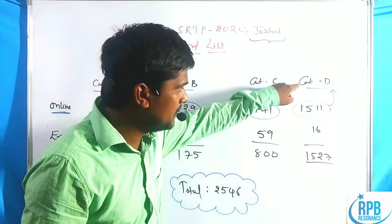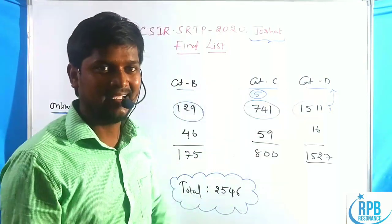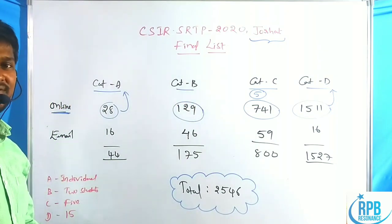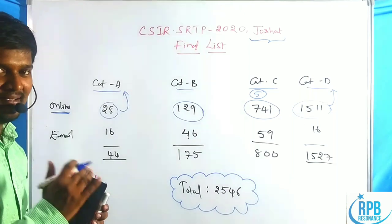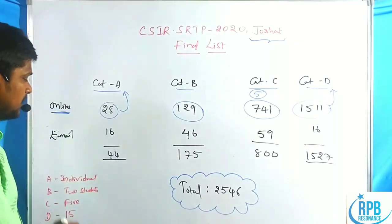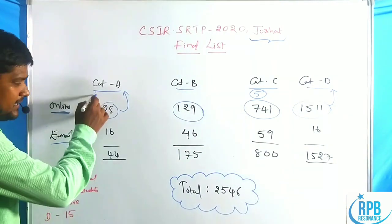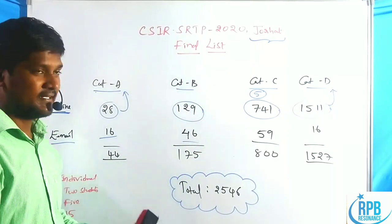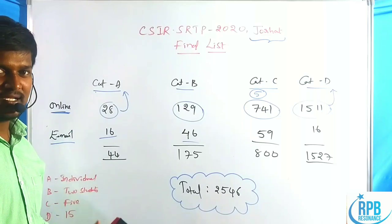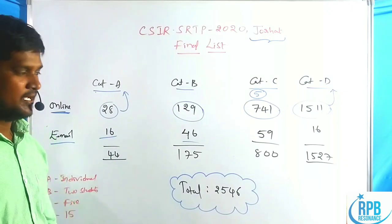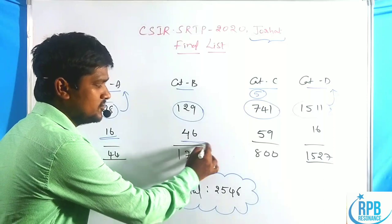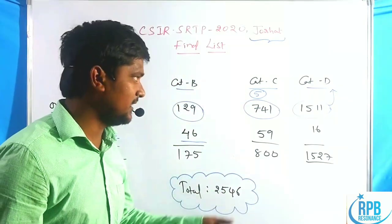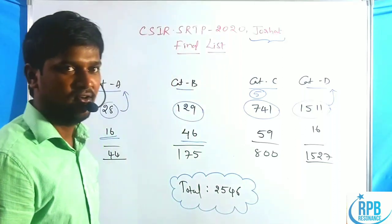Category D consists of online applicants only. For email applicants, Category A has 16 candidates and Category B has 46 candidates, numbered in series 1 to 62 — where 1 to 16 are Category A and 17 to 62 are Category B. Category C email applicants are 59 students and Category D email applicants are 16 students.